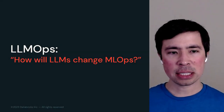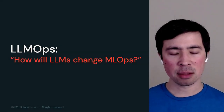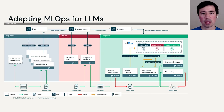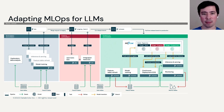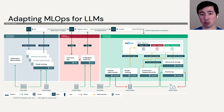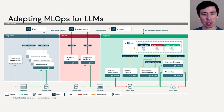Let's talk about LLM Ops. In particular, how do we take this traditional ML Ops architecture diagram and figure out what might change when we put an LLM in here? This is the same diagram we just saw in the previous video, but I'll walk through and point out a few key areas.